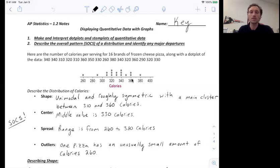Next, describe the center. So shape, center, the middle value. Since there's 16 pizzas, just count to eight, and it will be the middle. So the average of those two, which would be 330, is the middle of this, or the center of this distribution.